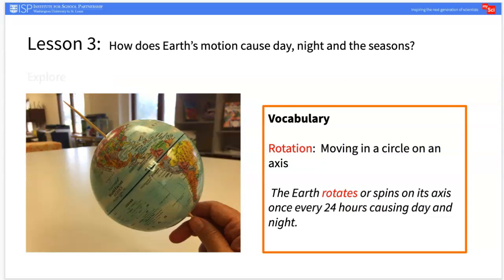Next, introduce the vocabulary. This movement is called rotation and the Earth rotates once on its axis every 24 hours. Further explore this idea by having students model how the Earth's counterclockwise rotation causes the Sun to appear to rise in the east and set in the west.